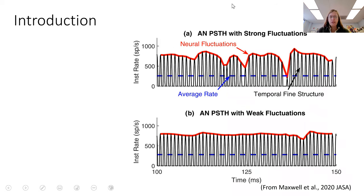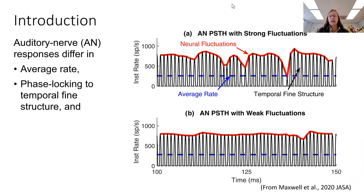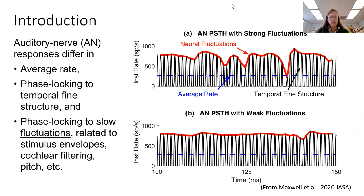As you know, auditory nerve responses are often characterized in terms of average rates, phase locking to fine structure, and we've recently been focusing on a different aspect: the slow fluctuations that can be seen in histograms.